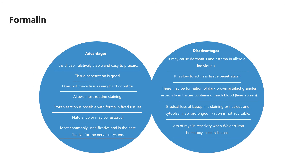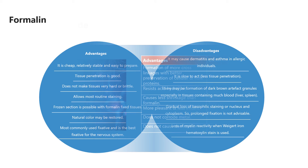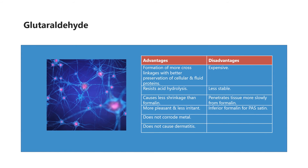Formalin is used for all routine surgical pathology and autopsy tissues when an H&E slide is to be produced. Formalin is the most forgiving of all fixatives when conditions are not ideal, causing no significant damage to tissue. It fixes most tissues well and is compatible with most ancillary testing such as immunohistochemistry and molecular testing. Glutaraldehyde is recommended for tissue fixation for electron microscopy. The glutaraldehyde must be cold, buffered, and not more than 3 months old. The tissue must be as fresh as possible and preferably sectioned within the glutaraldehyde at a thickness no more than 1 mm to enhance fixation.